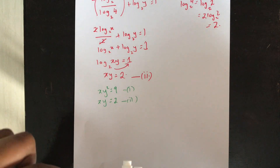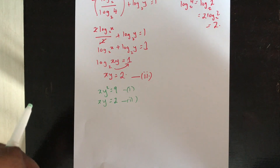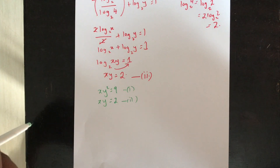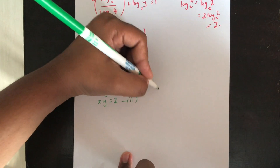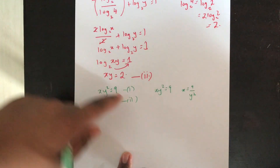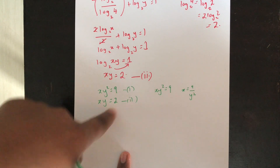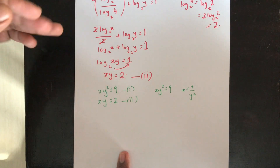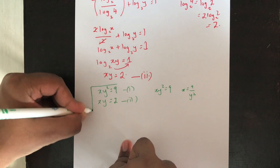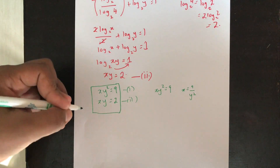Now I have to find the values of x and y. We don't have x plus y or x minus y, so there's no elimination method applicable here. We could use substitution: from xy² = 9, express x = 9 / y², then substitute into xy = 2. But I want to show another method — since these are product equations with xy² and xy, we can divide equation 1 by equation 2.